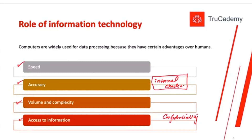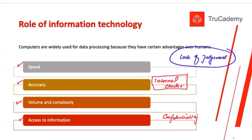So there are lots of benefits of using a computer system for MIS, but there are certain disadvantages as well. One of the biggest disadvantages is that computer systems have a lack of judgment. Humans will always apply some kind of judgment in particular situations — if they feel the rules will not help, they will deviate from that rule. But when it comes to computers, they are not able to apply judgment. Even if something is going wrong, as per the rules the computer will keep processing it. So there are lots of advantages, but certain disadvantages as well.